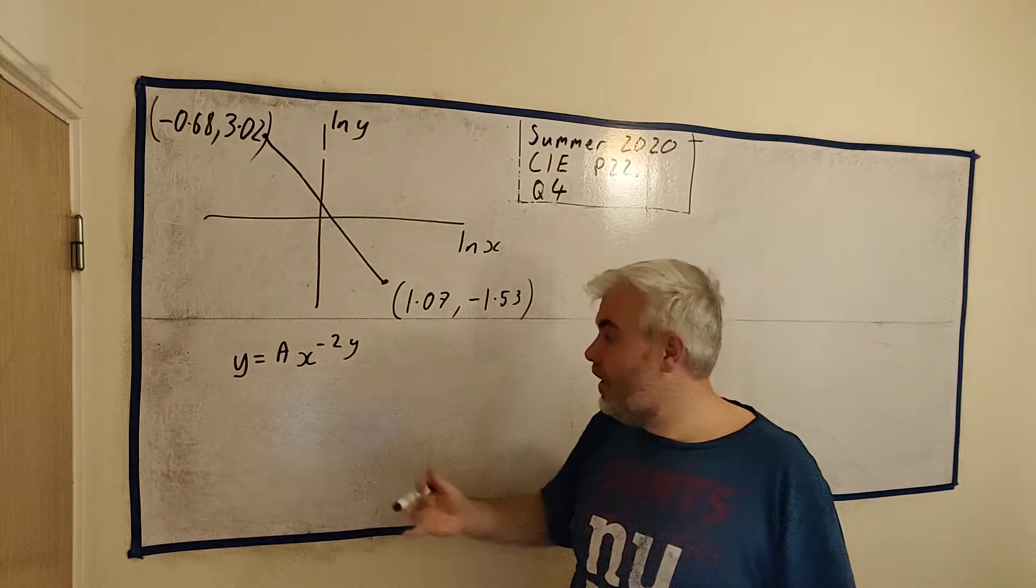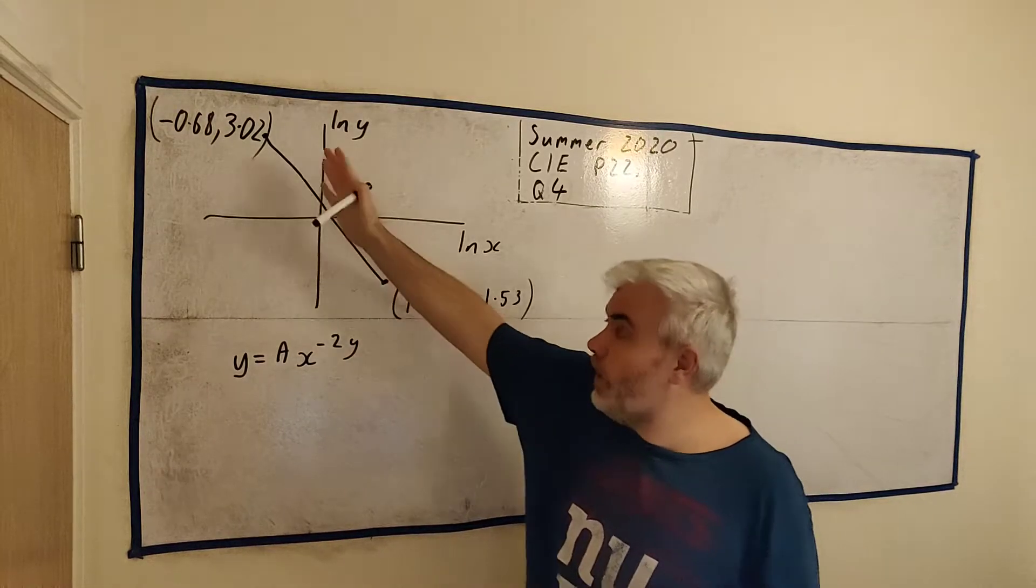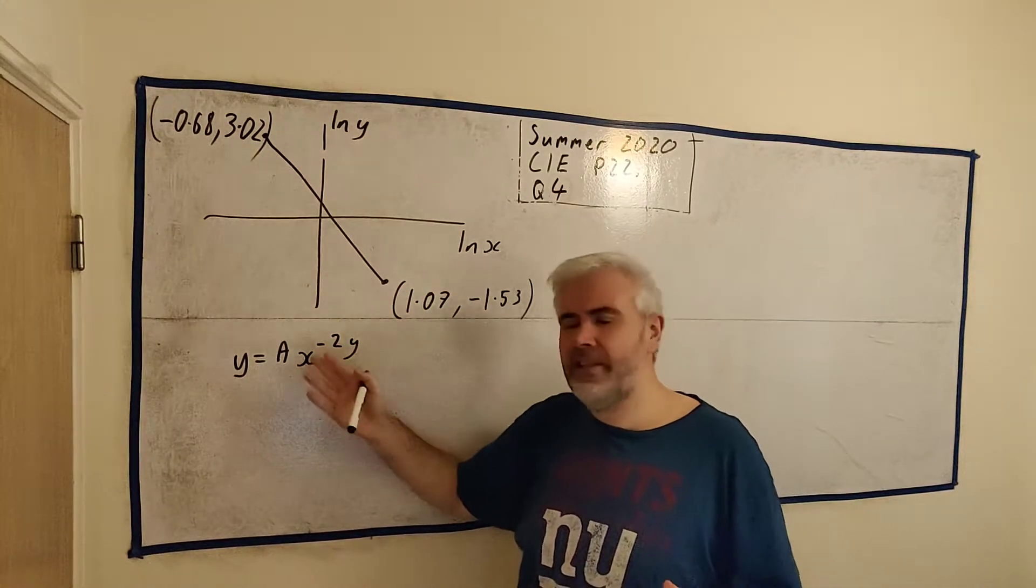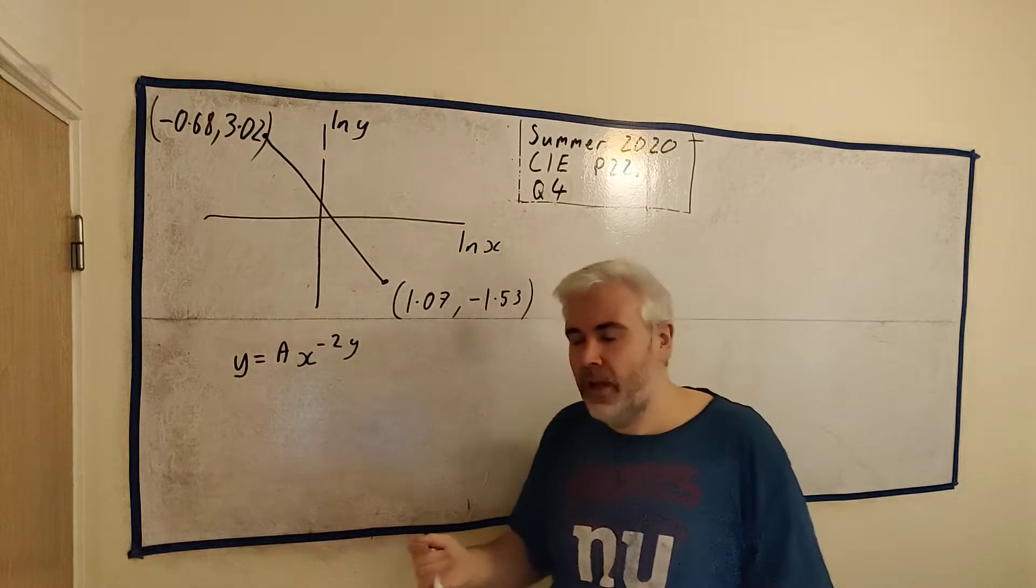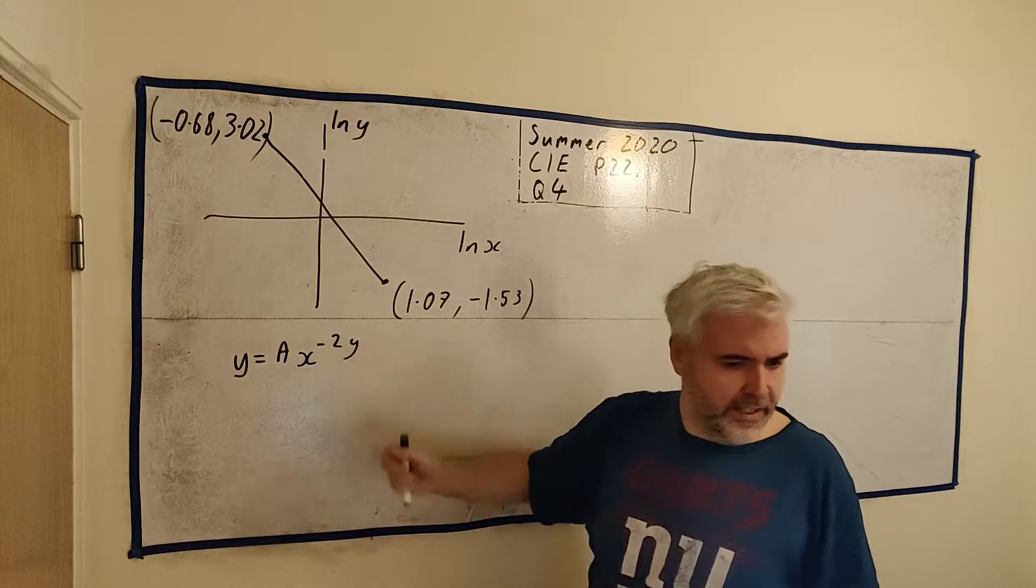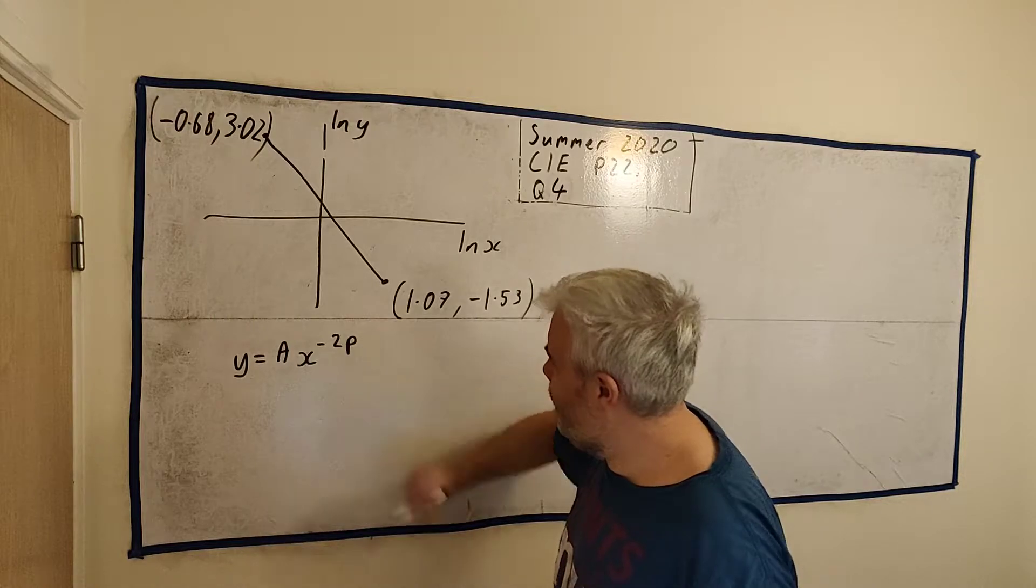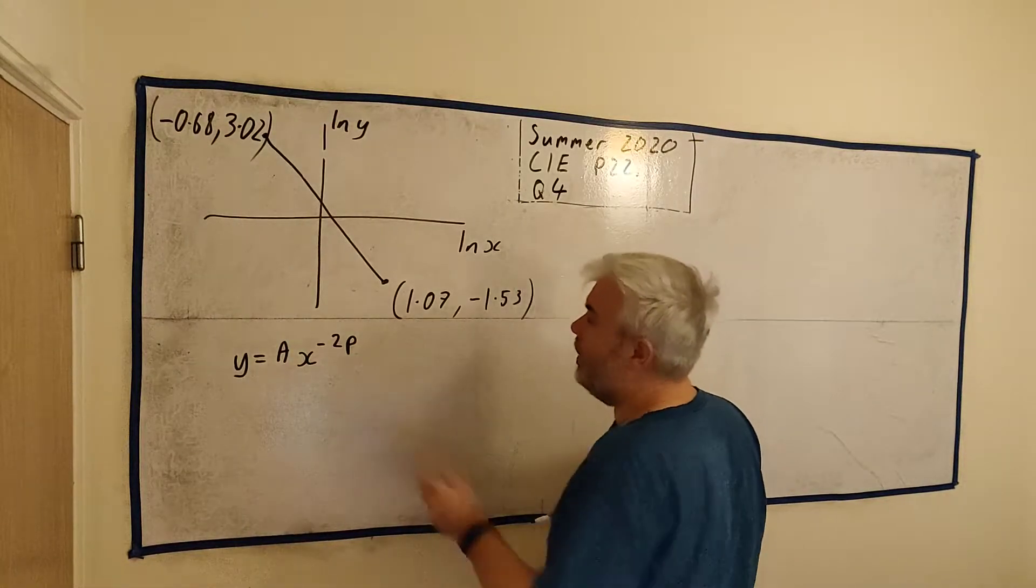They also tell us that x and y conform to this equation here. So here's x and y in this picture and they're also telling us x and y will fit into this equation. So they'd like us to find what is A and what is—I think I'm missing a letter here. Yes, this should be P instead of y, apologies for that. So what is A and what is P?